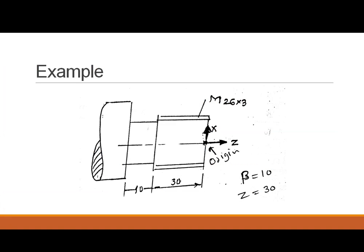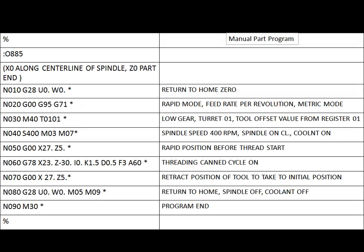We have seen the lathe operations, how the coordinate system works with lathe machining centres, the X coordinate programming modes — diameter and radius — and the various G codes and M codes, including the new additions for lathe machining centres. We also saw the canned cycle for threading using G78 on the lathe machine. Stay tuned for more interesting content on CAD CAM CA. Thank you very much.